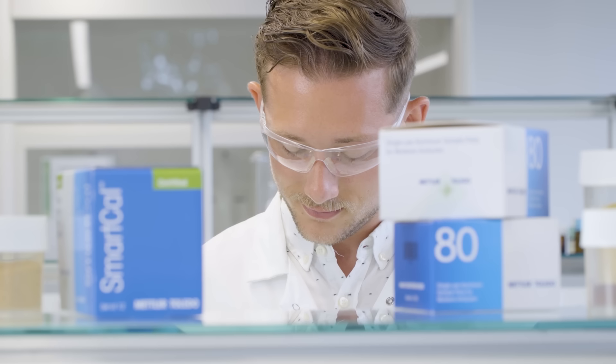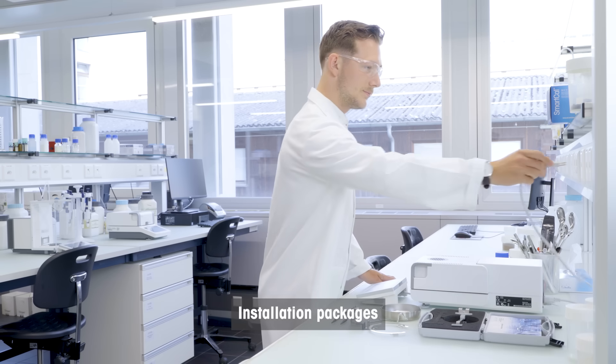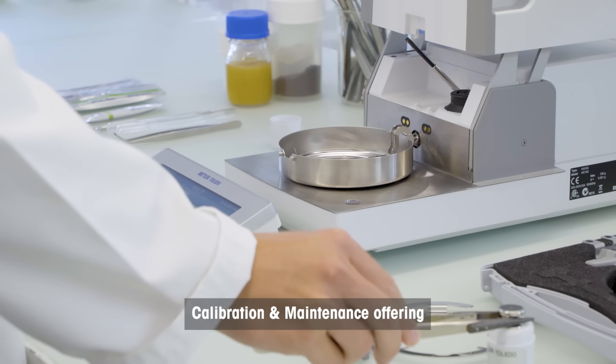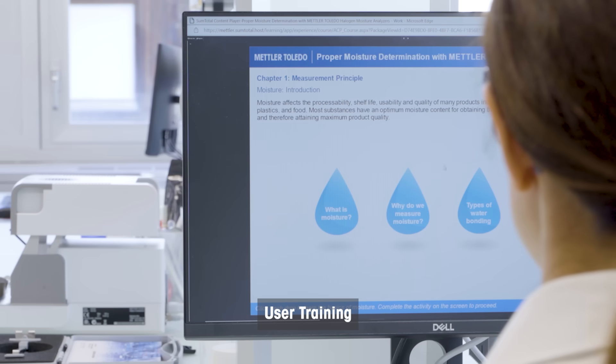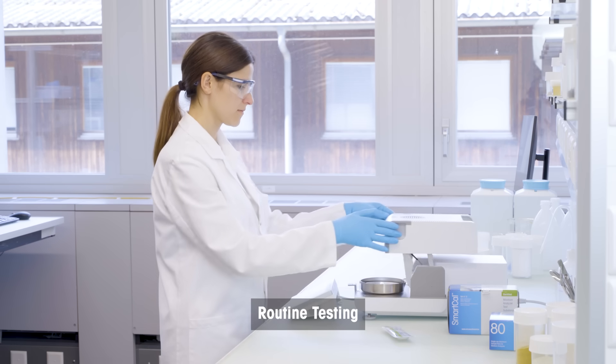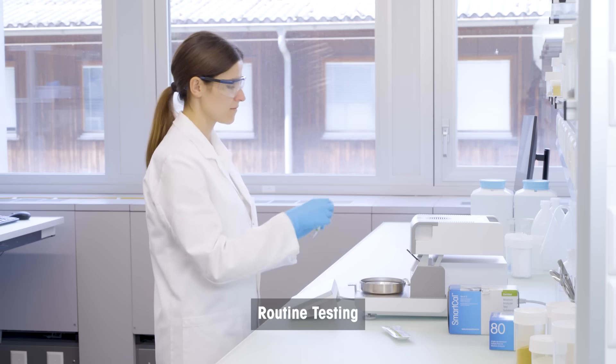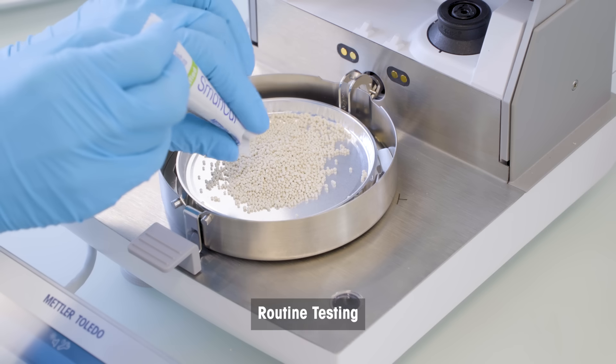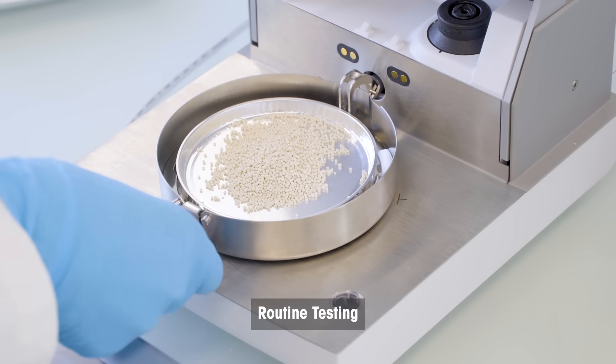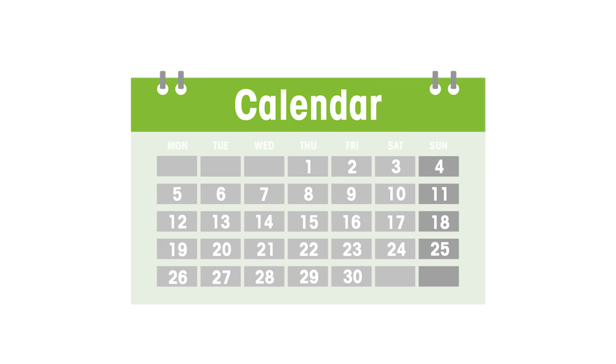In addition, based on your process risks, GMAP recommends the right installation package, calibration services, user training and frequency of routine testing to control the overall performance of your moisture analyzer. Please note that calibration and routine testing frequencies are based on risk. That means if your risk is high, more activities are recommended. If your risk is low, then you can save effort by doing them less frequently.